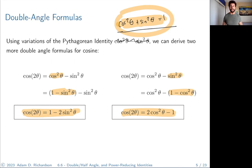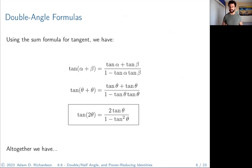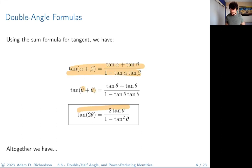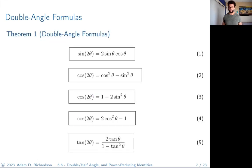For tangent, we use the angle sum formula for tangent, set alpha and beta to the same angle, and get the double angle formula for tangent. So altogether we have one formula for sine, three for cosine, and one for tangent. These double angle formulas allow you to express a double angle in terms of single angles.